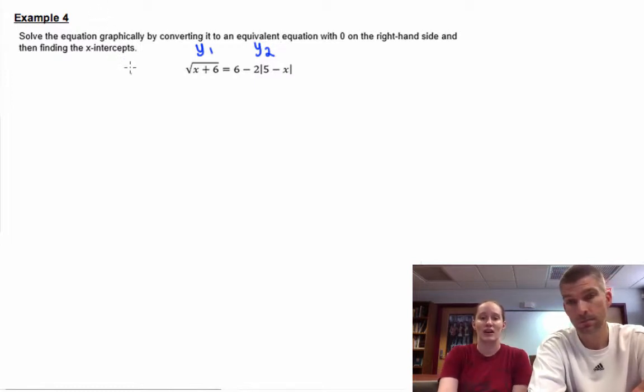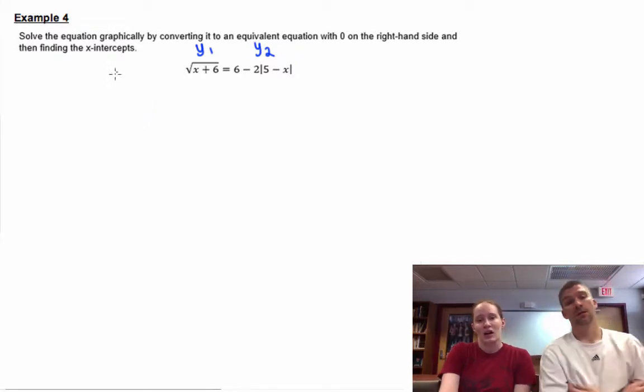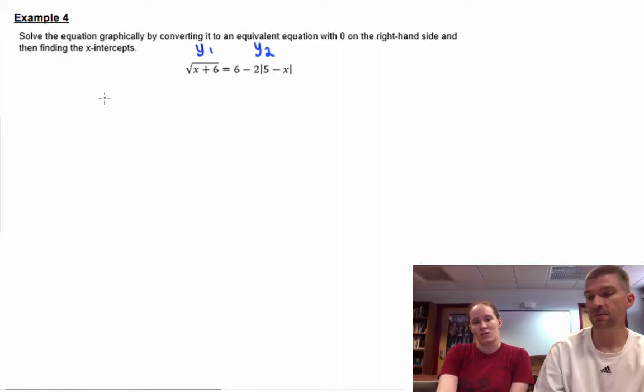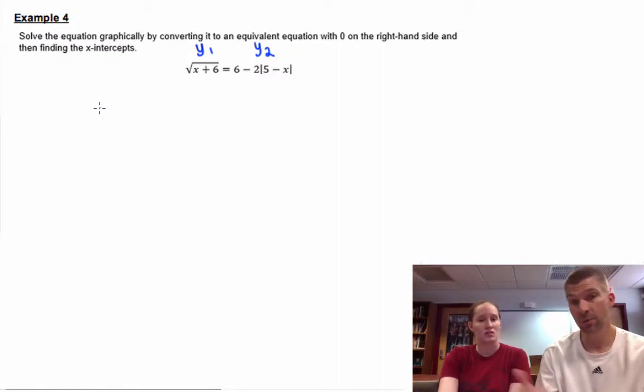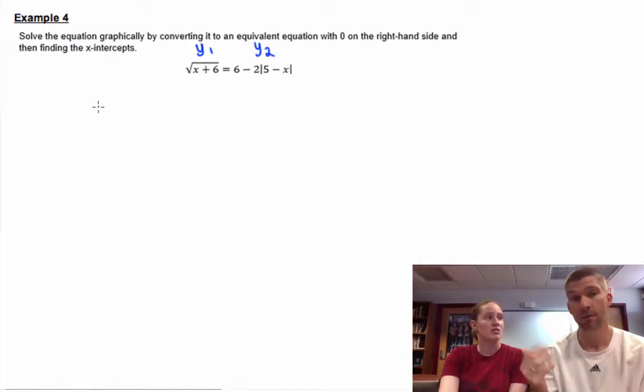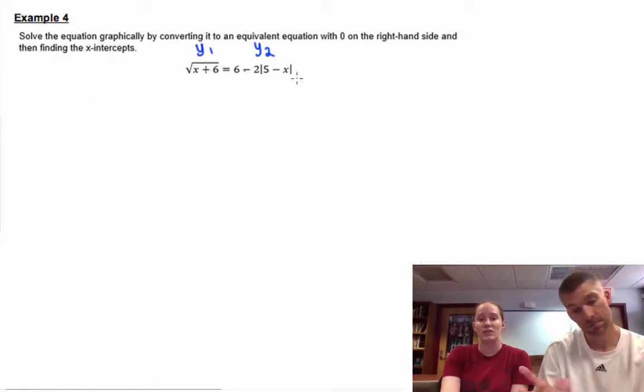Whereas if you get everything on one side and you're looking for where it goes to the x-axis, you at least know it should be somewhere on the x-axis. So those are your drawbacks. Sometimes if you have a really wacky y-value or x-value, and you're trying to find the Y1 equaling Y2 part, it can be really hard. So just get everything on one side.